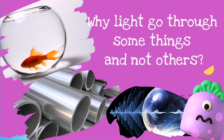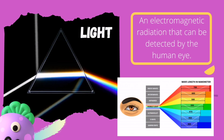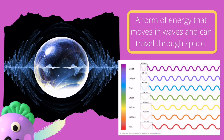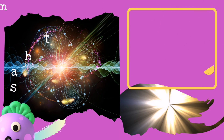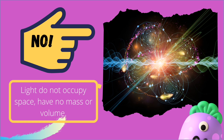Do you know why light goes through some things and not others? What is light made of and how does light help us survive? Light is commonly called electromagnetic radiation that can be detected by the human eye. Light is a form of energy that moves in waves and can travel through space. Unlike sound, light does not need matter to transmit its energy.